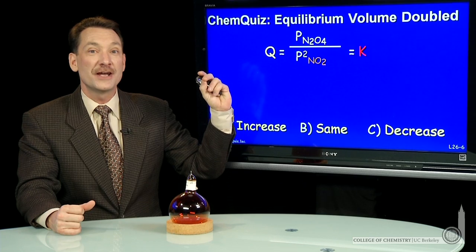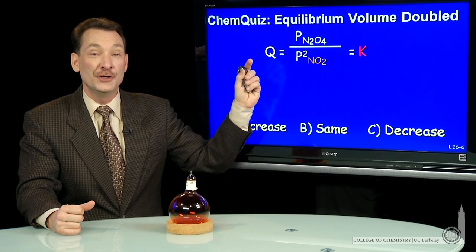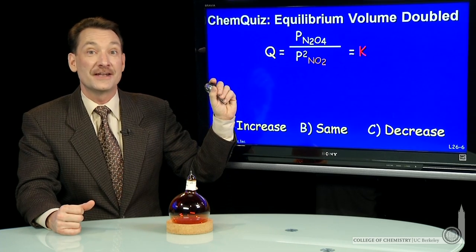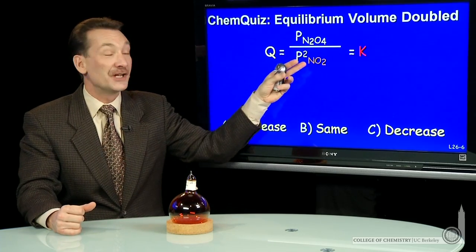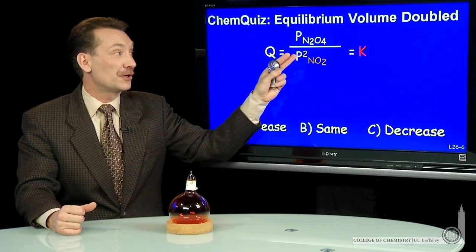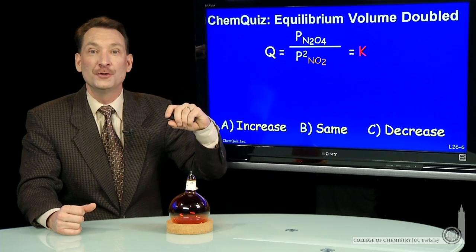What I'm going to do here is write the expression for Q for that chemical reaction, that dimerization. The products, N2O4, over the reactants squared, because the stoichiometric coefficient of the NO2 was 2.